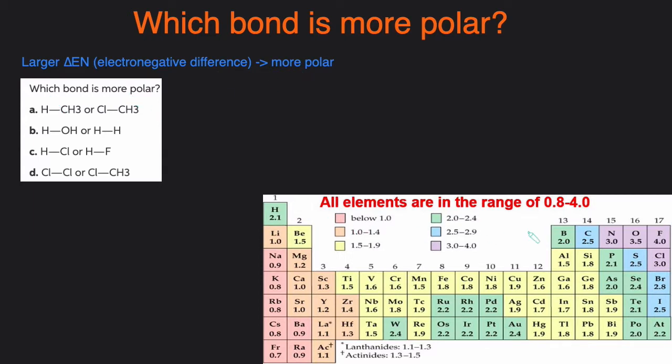Let's take a look at some examples. I have the electronegativity values table written right here.